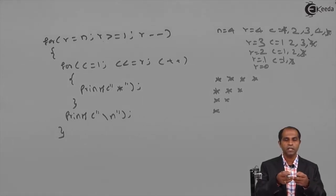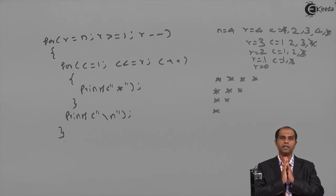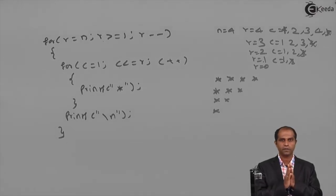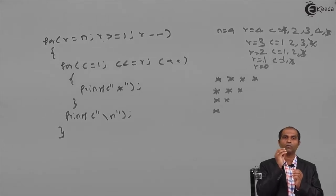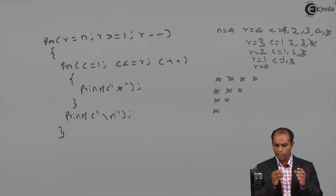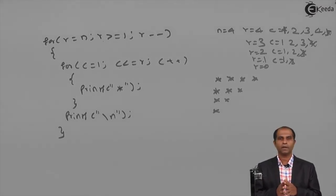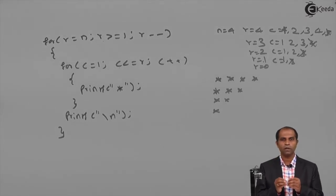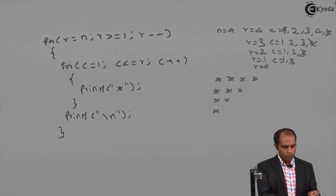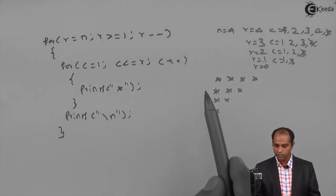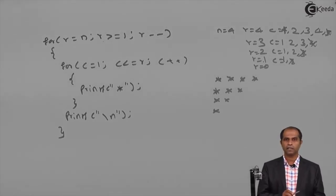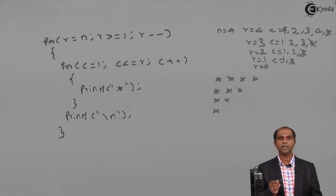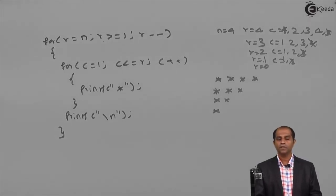We have virtually generated the inverted pattern. Whenever there is an inversion of any right angle triangle, the only loop that changes is the R loop — not the entire structure. Keep the C loop as it is; R will go from N to 1 and C will go from 1 to R. You can also use numbers or alphabets in this pattern — just observe the first column and check what character to print and whether it is incrementing or decrementing.